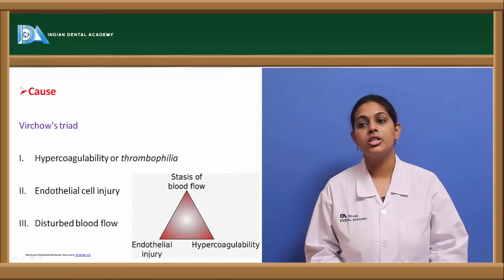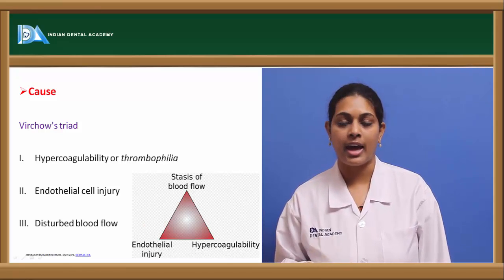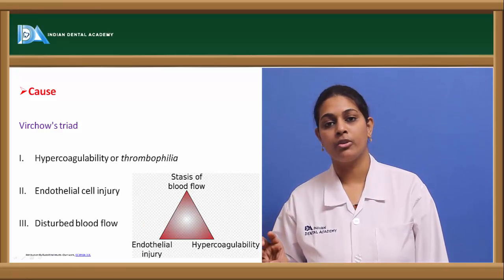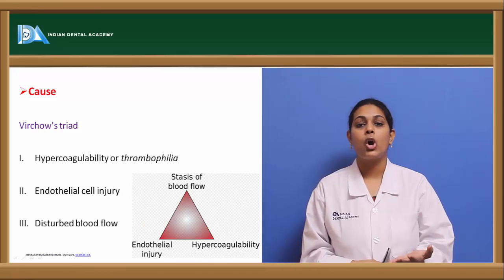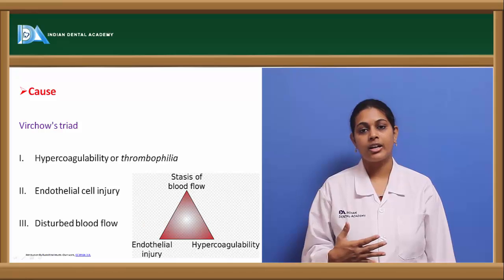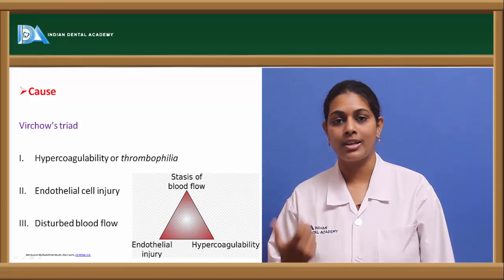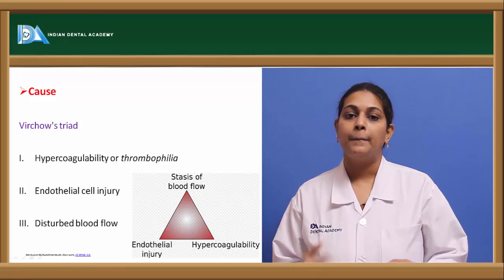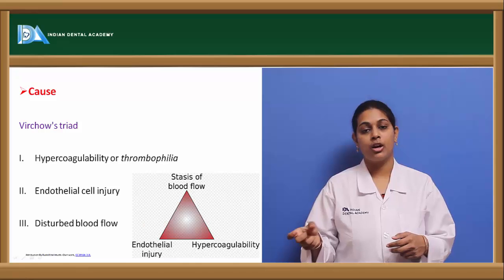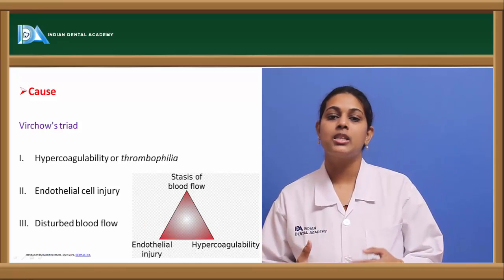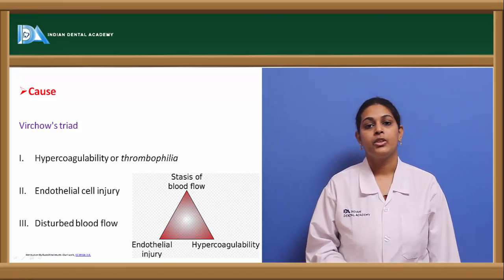Based on certain studies, thrombosis is characterized by a triad of causes. The first is hypercoagulability, also known as thrombophilia. Hypercoagulability means increased coagulation, which is majorly because of alteration in the clotting factors. An increase in the quantity of clotting factors or increased platelet count can result in hypercoagulability. Increased blood viscosity can also result in hypercoagulability.